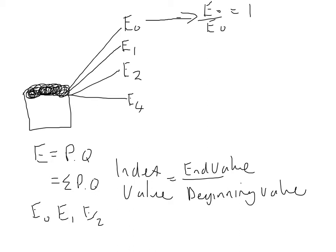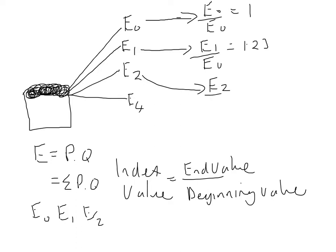The next calculation will be E1 divided by E0 - maybe that gives us a value of 1.23. The next one will be E2 over E0, let's say that gives a value of 1.56. Remember, these values I'm just pulling out of the air for illustrative purposes.